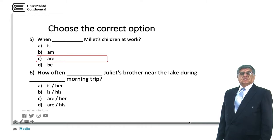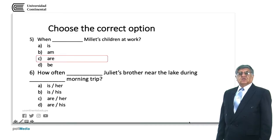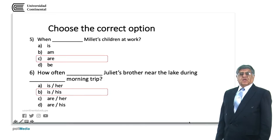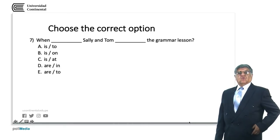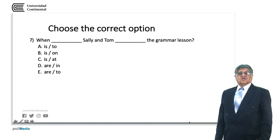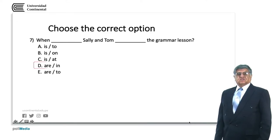'How often' — Juliet's brother is singular, so we use 'is'. Options A and B are possibilities; C and D are not correct. 'How often is Juliet's brother near the lake during his morning trip?' — 'her' is for female and 'his' is for male. So our answer is B. In number seven, 'when Sally and Tom' is plural, so we use 'are': 'Where are Sally and Tom in the grammar lesson?' The correct answer is D.